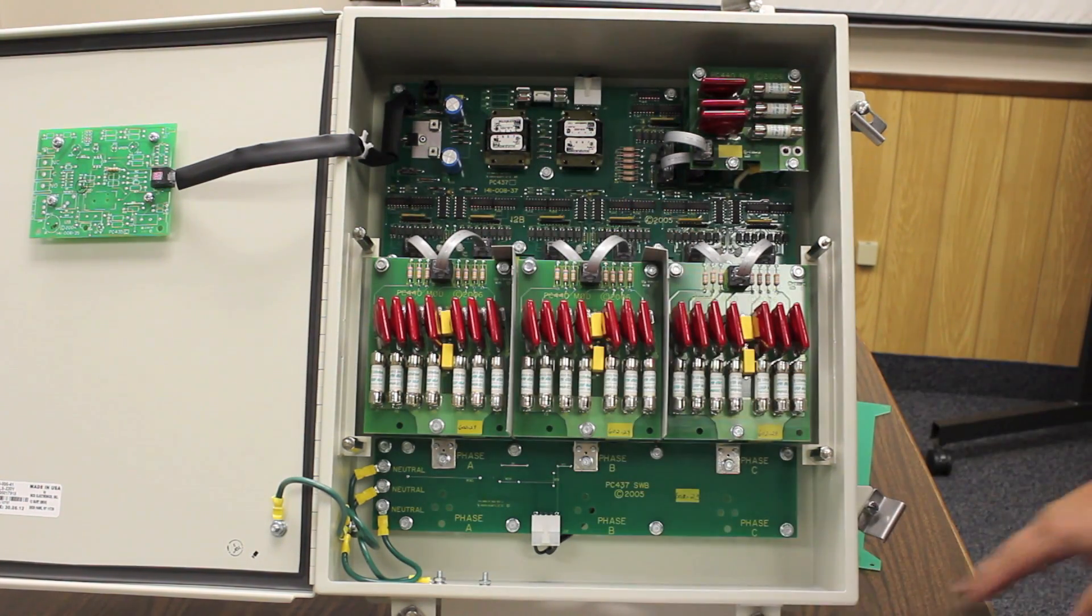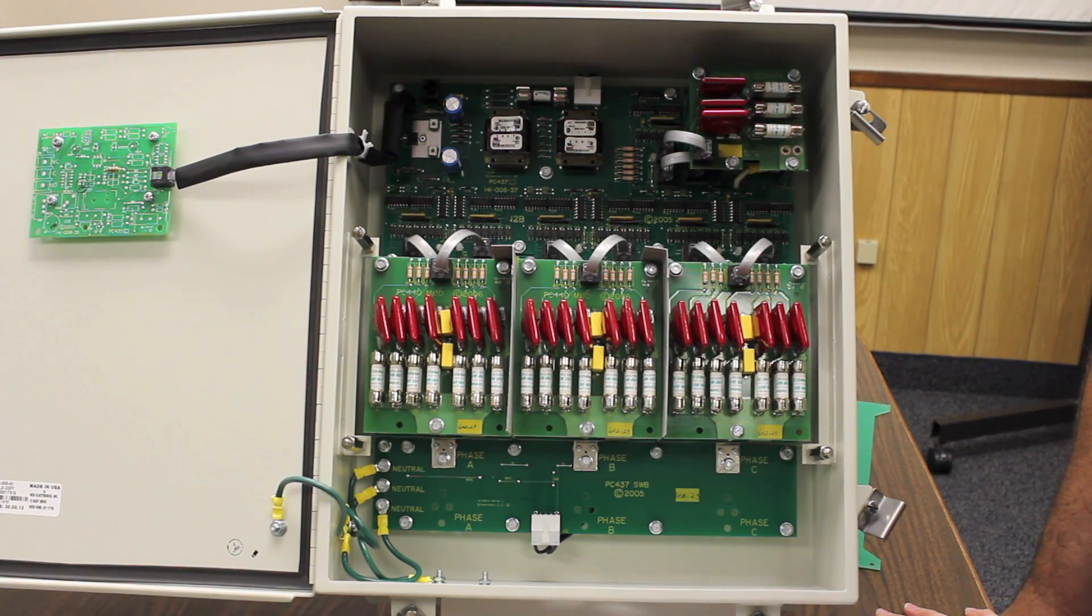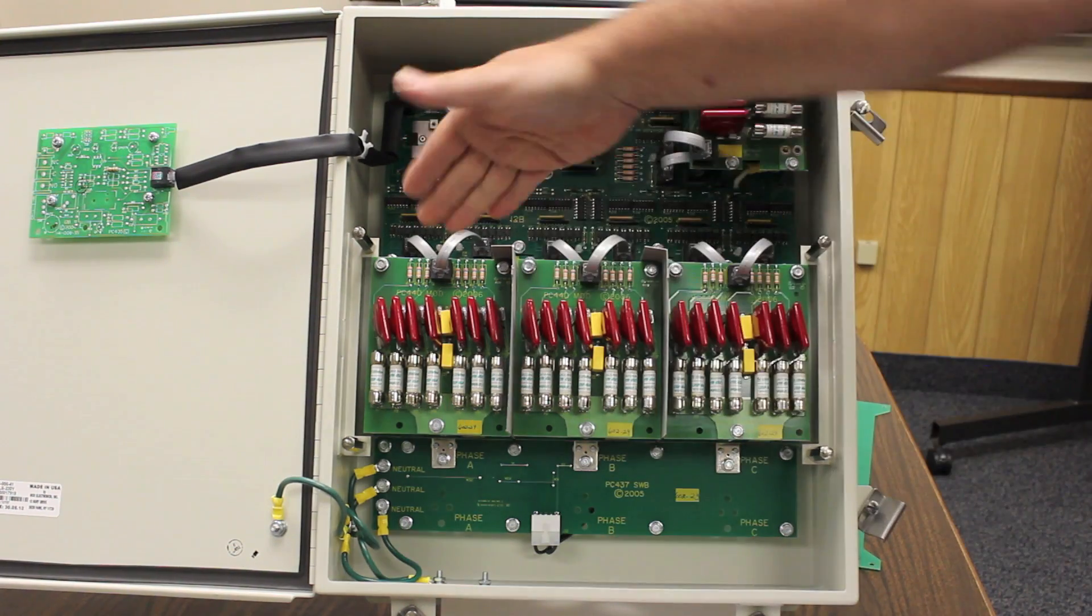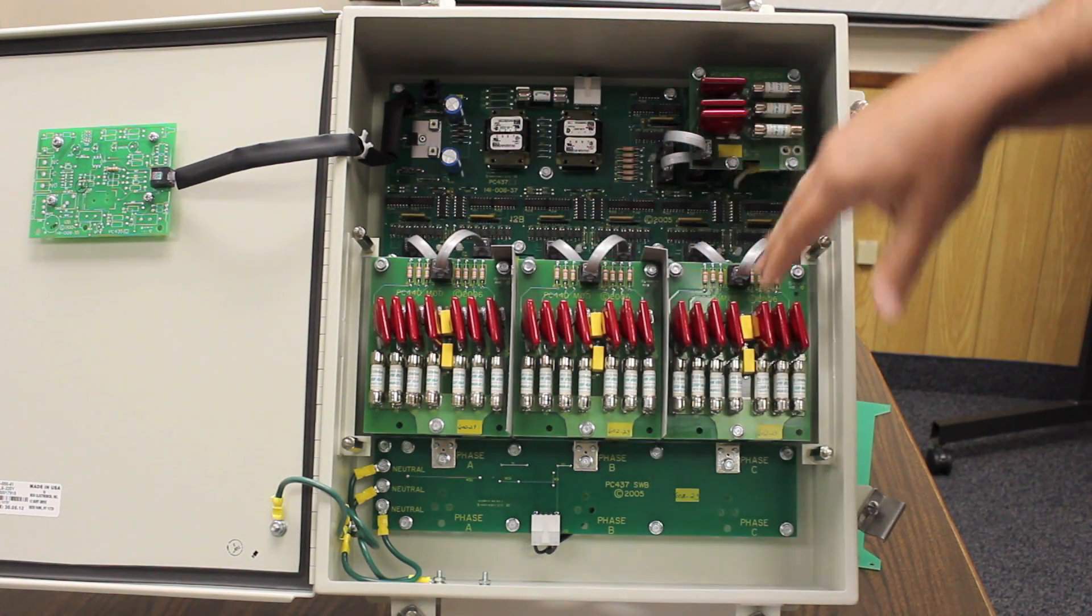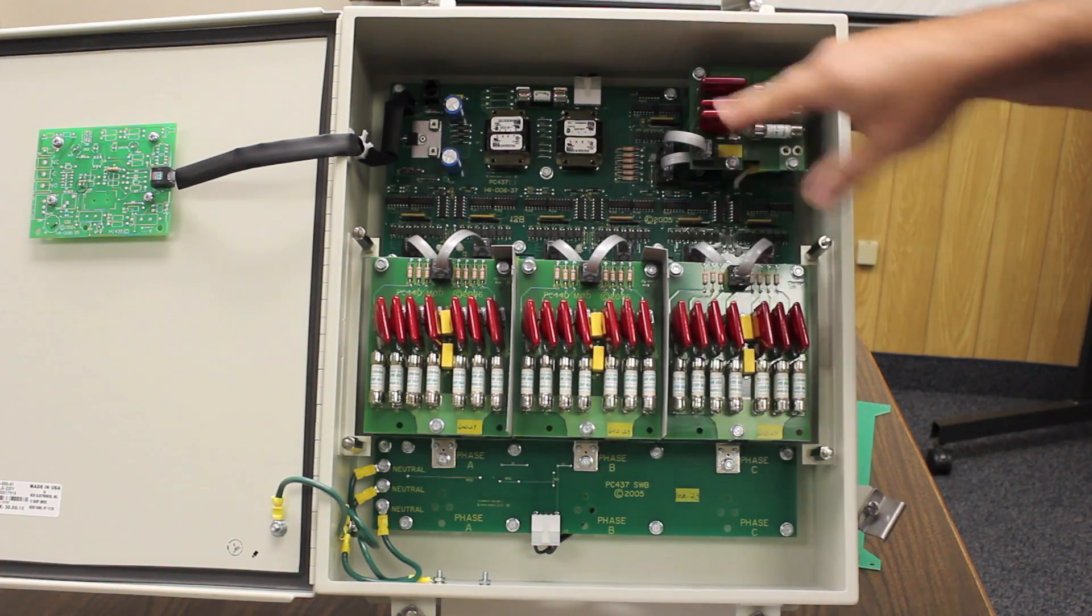As you can see, this is pretty much a no compromise design to make sure that protection is always present on your facility. There's 14 surge paths per phase on the 560 model. This is phase A, B and C and neutral ground.